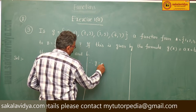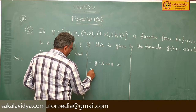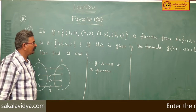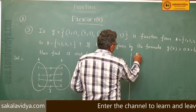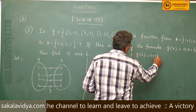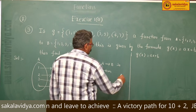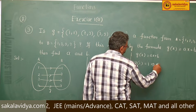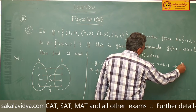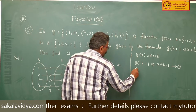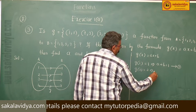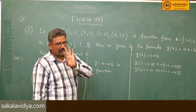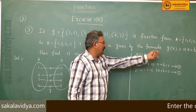Therefore g: A→B is a function, and not only a function but also 1-to-1 (an injection). Since g(x) = ax + b, the image of 1 under g is g(1) = 1, which gives a + b = 1 — equation 1. Similarly, g(2) = 3 gives 2a + b = 3 — equation 2. Two linear equations are enough to find a and b.